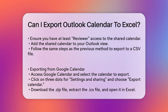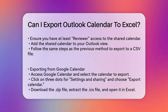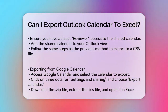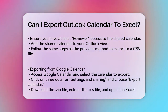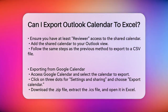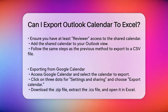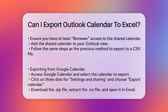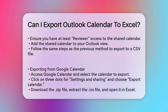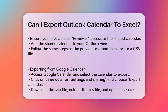Method 3: Exporting a Shared Calendar. If you need to export a shared calendar, you'll need at least reviewer access to that calendar. Start by adding the shared calendar to your Outlook view. Right-click on the shared calendar in the calendar view and select Add Calendar from address book. Once the shared calendar appears in your view, go to the File tab, click Open and Export, and then select Import/Export. Follow the same steps as before to export the calendar to a CSV file.